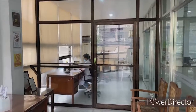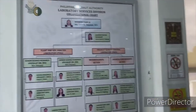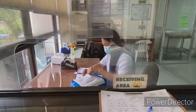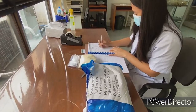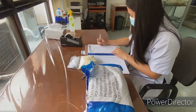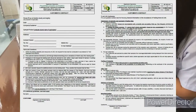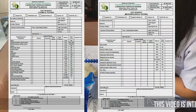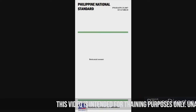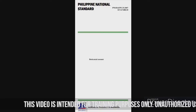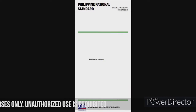Sample receiving is done at the second floor of the laboratory building in the PCA central office. For DCN samples, a minimum of 500g sample is required. The customer will be asked to fill out the customer's contract, and the LSD staff prepares the test request and order of payment.